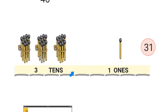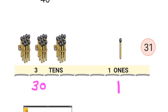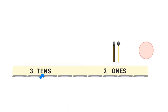Here I have 3 tens. We know that 1 ten is 10, 2 tens are 20, and 3 tens will be 30. So I have 3 tens and 1 one, which means I have 30 plus 1 — 31 matchsticks in all.